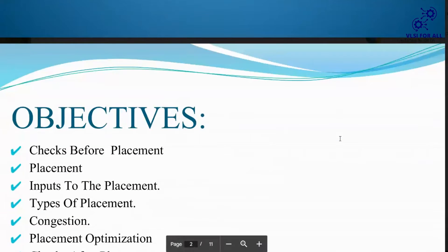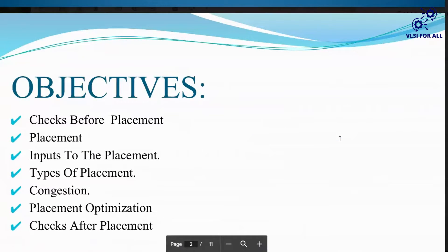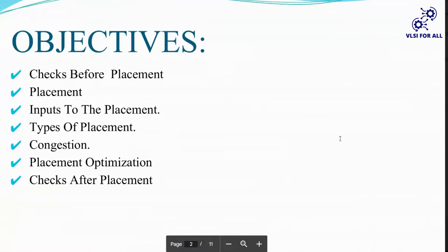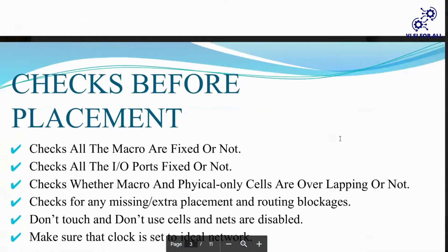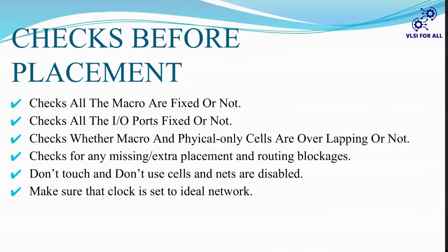The objectives of placement: we need to check what placement is, what are the inputs, the type of placement, conditions, and optimizations. After placement is done, we need to check what is required before going to CTS. The jobs before starting placement: first we need to check whether macros are in fixed locations, whether macros are overlapping, whether they are forced or fixed, and whether physical-only cells are overlapping. If any blockage is missing we need to check that, and if we are using don't-touch or don't-use cell attributes we need to disable those before moving to the placement stage.